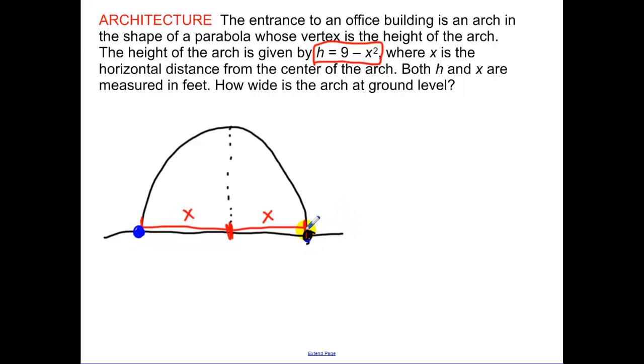What do we need to find here? We need to find the x-intercepts. We need to find those zeros. We need to find the roots. What is the arch of the height when it's above the ground, when it's sitting on the ground? That's zero. So we set our height equal to zero.